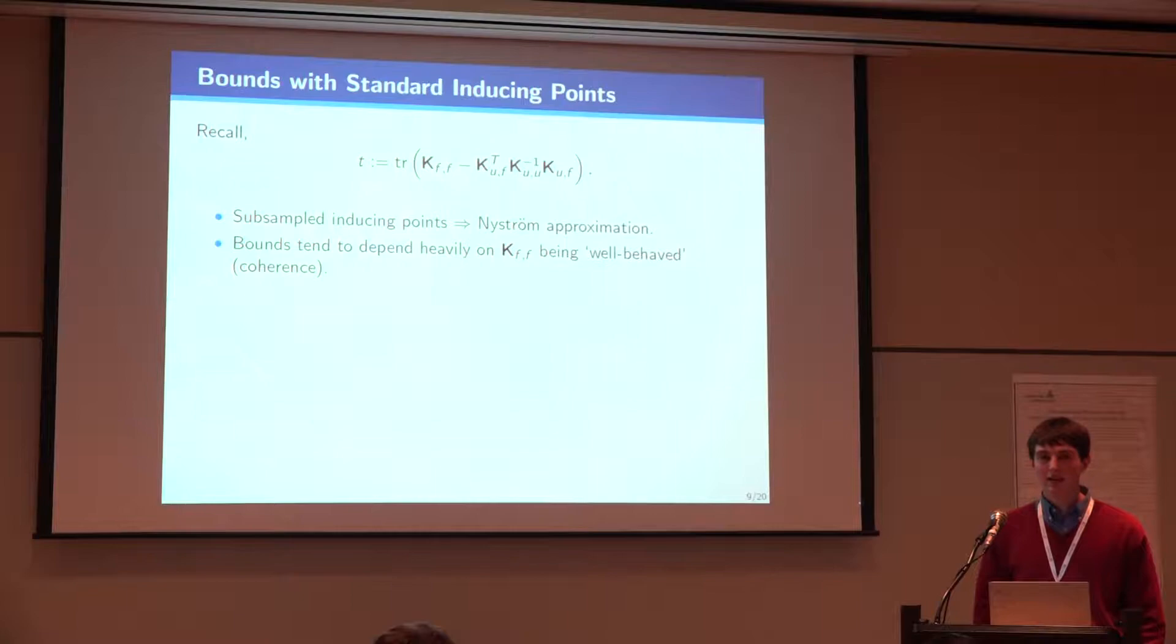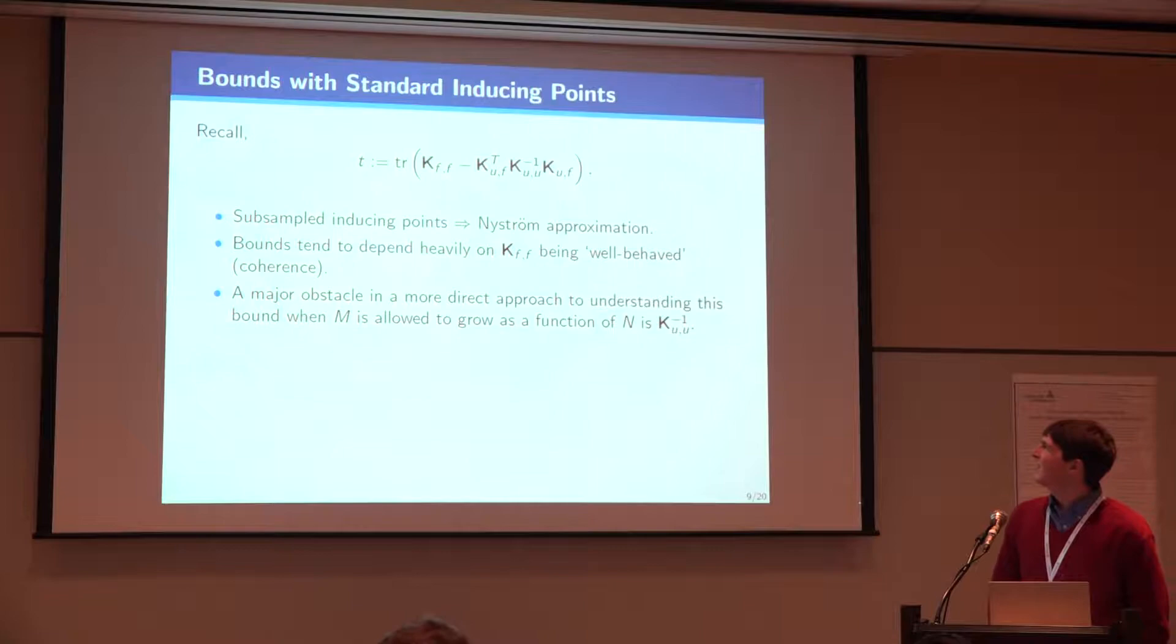There are bounds in the literature on this, and this is something we're currently looking at. They tend to depend really heavily on the covariance matrix being well behaved, in particular on something called matrix coherence, which basically says that the diagonal values are relatively homogenous. The naive thing to do would just be write down what the entries in this rank M matrix are. But we have this big matrix inverse, and that makes that difficult. So instead, we're going to define an inter-domain feature which makes that cross covariance, or the covariance matrix between the features, the identity matrix, and then that will just go away.